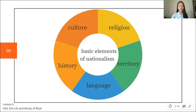We have five basic elements of nationalism. First is culture — shared beliefs and a way of life create a common bond among people. We also have religion, wherein a common religion helps unite people in a certain area. We have territory, wherein shared land gives people a sense of unity. We have language, wherein a common language is a key element of nationalism. And lastly, history, wherein a shared past connects people as a group.